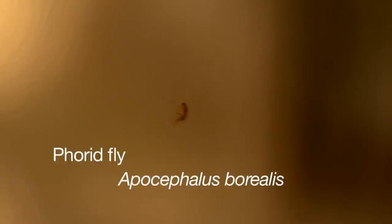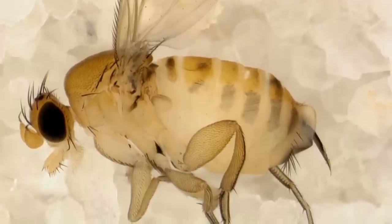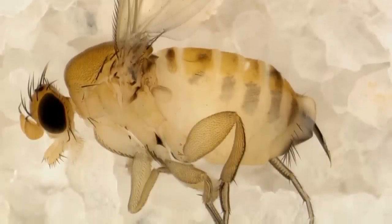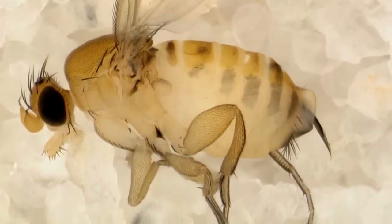That's when I started putting two and two together to try and figure out why they were there and what was going on. The fly that we're working with is a creature called Apocephalus borealis. It's a very small fly, smaller than a fruit fly, and it's a native fly that normally parasitizes bumble bees and yellow jacket wasps. But it's changed over and now is parasitizing the non-native honey bee that came to us from Europe. We've nicknamed it the zombie fly because of the way in which honey bees react to being parasitized by it.